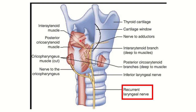The recurrent laryngeal nerve supplies muscles located on the posterior and lateral side of the larynx, including the inter-arytenoid muscles, posterior cricoarytenoid muscles, and cricopharyngeus muscles. It ascends along the lateral side and supplies both the lateral and posterior muscles of the larynx.